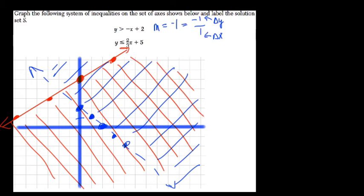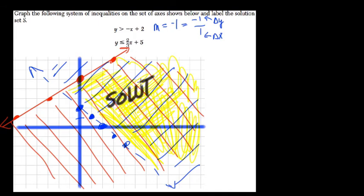And label the solution set S. Well, the solution set S is where these two lines cross. So you wouldn't be coloring it in. I'll put it colored in for you, because I have the color available. But what you could do is just write in this region, this is the solution set S.